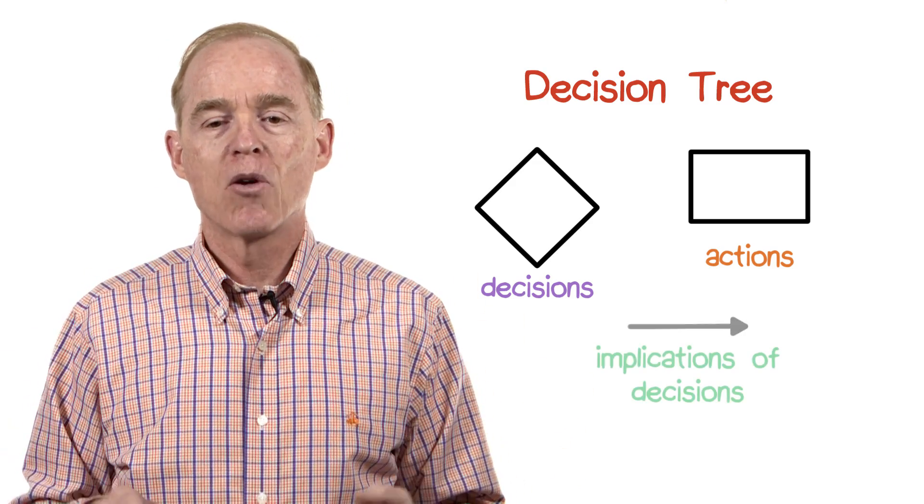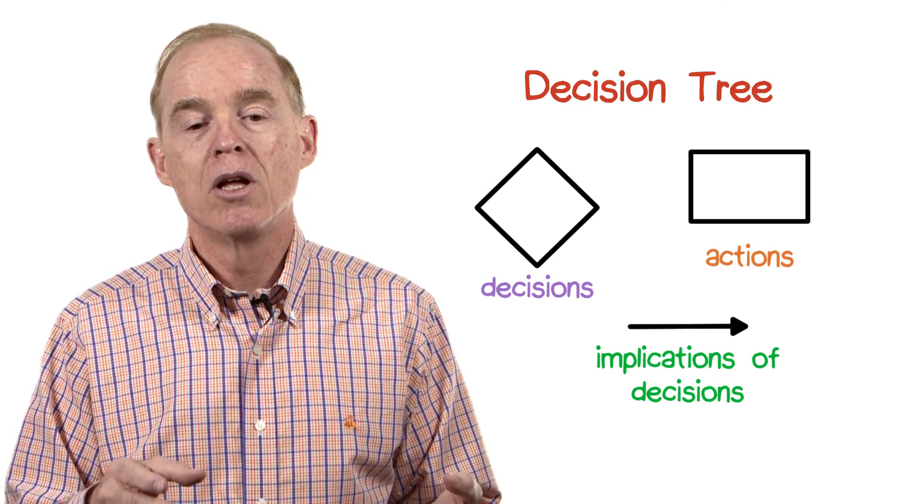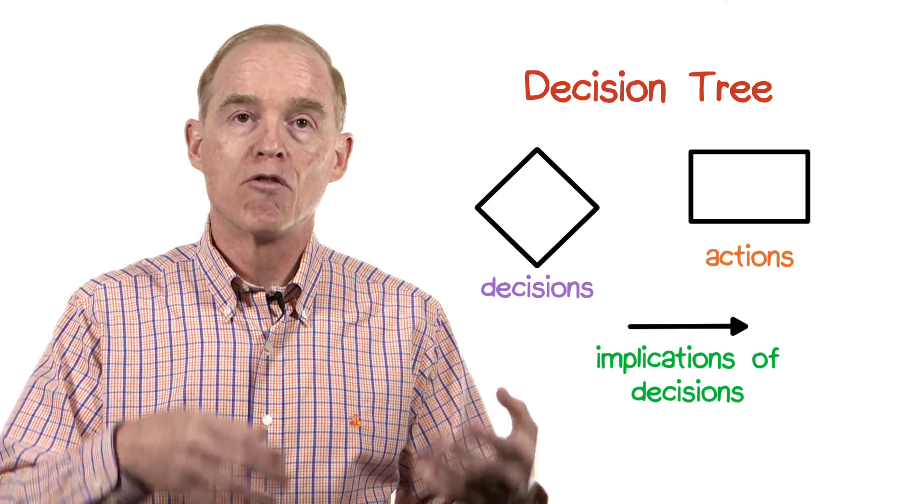The arcs in the diagram indicate the implications when a decision is answered in a particular way, either affirmatively or negatively.